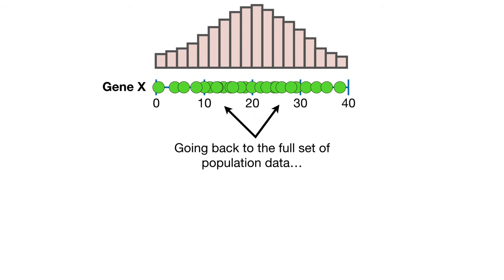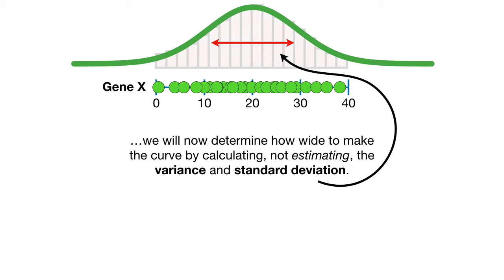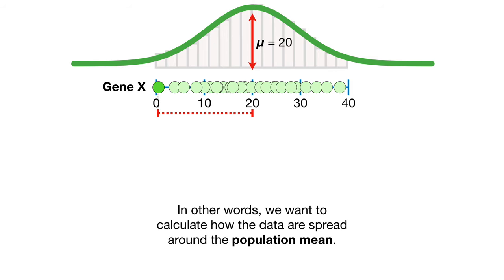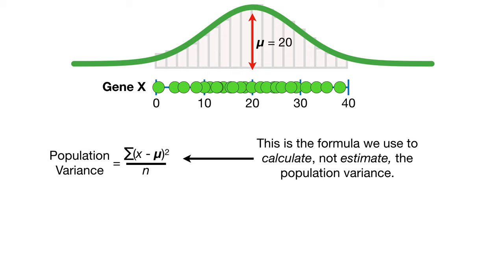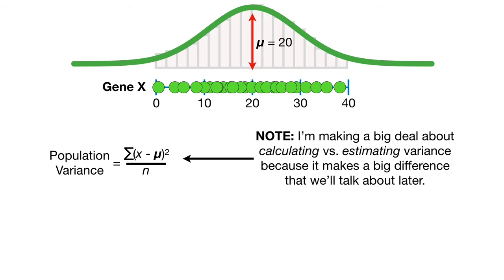Going back to the full set of population data, we will now determine how wide to make the curve by calculating — not estimating — the variance and standard deviation. In other words, we want to calculate how the data are spread around the population mean. This is the formula we use to calculate, not estimate, the population variance. Note, I'm making a big deal about calculating versus estimating variance because it makes a big difference that we'll talk about later.